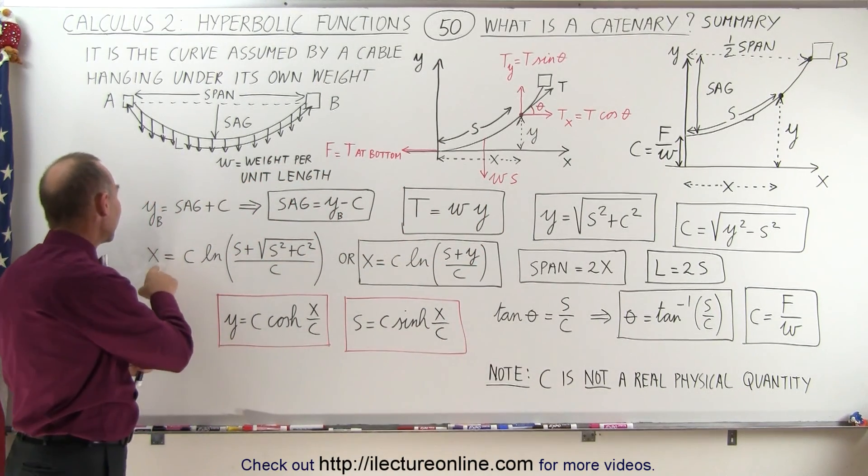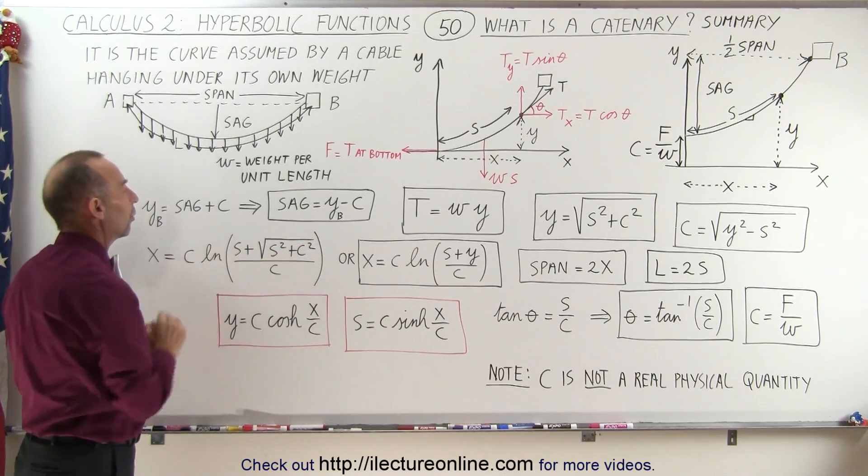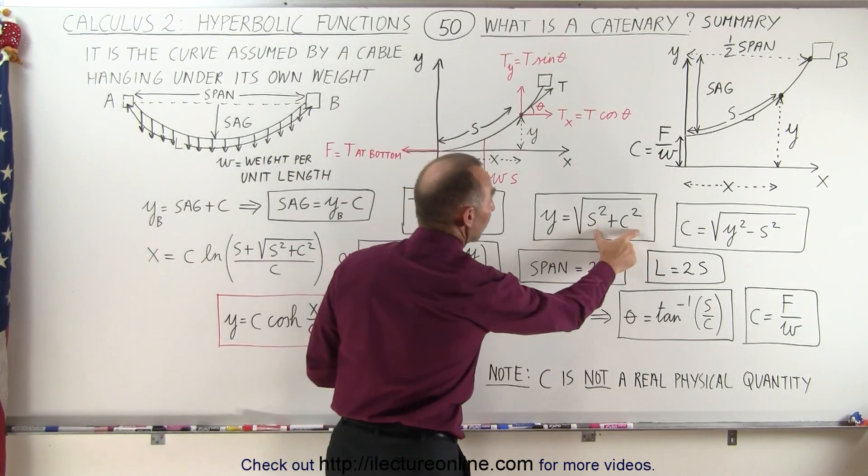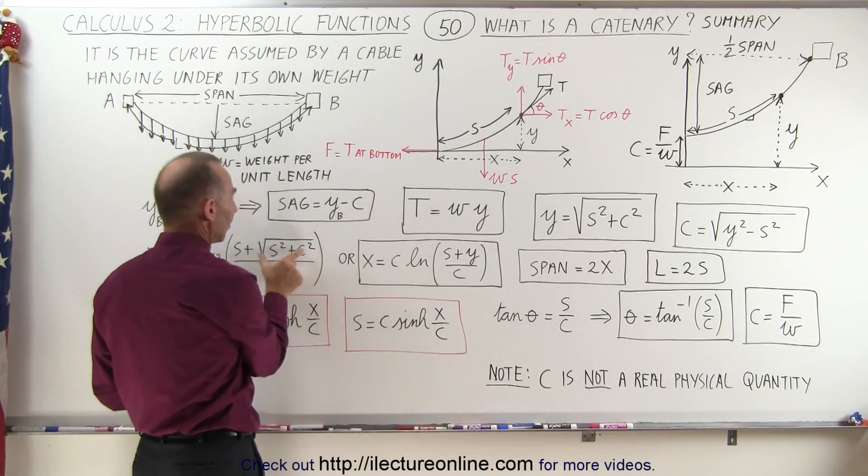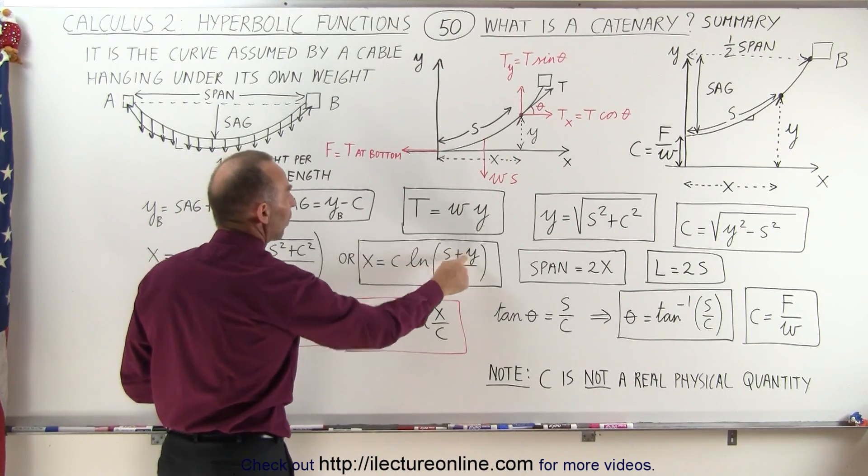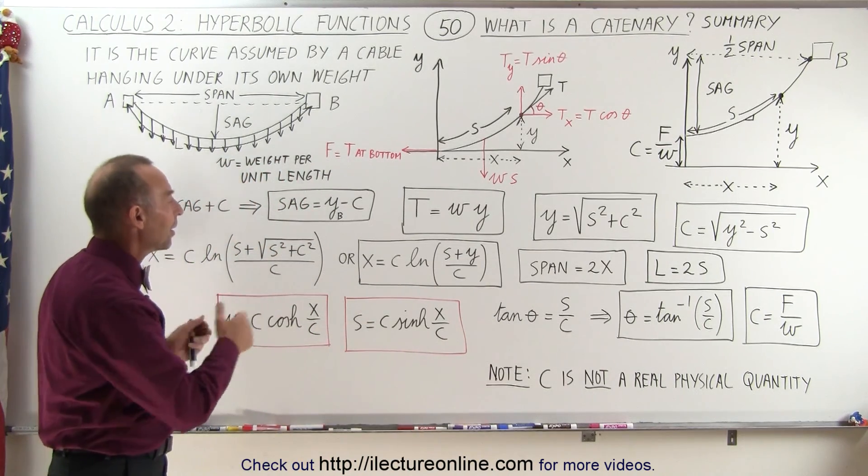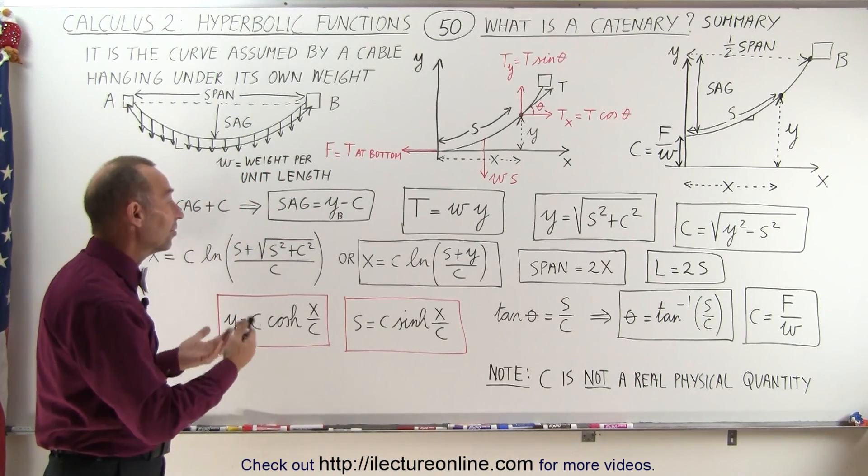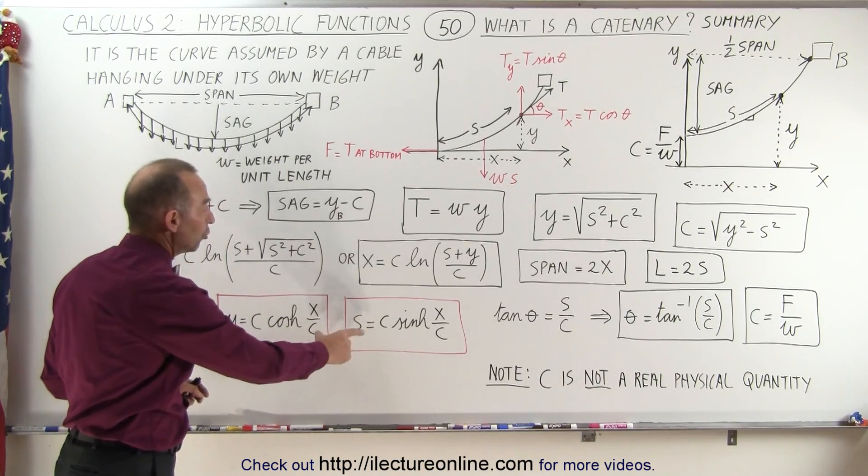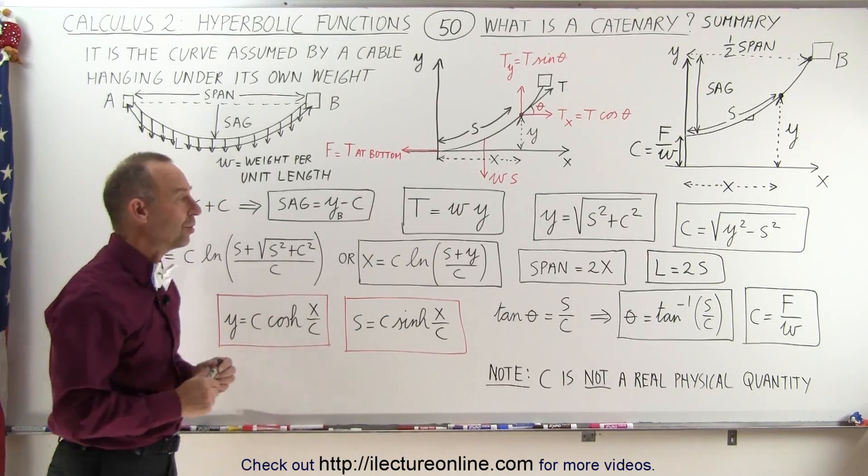Also we realize that x is equal to c times the natural log of s plus the square root of s squared plus c squared over c, and then realizing of course that y is equal to this quantity right here, we can replace this by y, and so x can be written in terms of c times the natural log of s plus y over c. Now of course that is not the form of the hyperbolic functions, but sometimes that is necessary, and of course we don't have an equation that we can use to solve for x in terms of the hyperbolic functions, so maybe this one can help us do that.